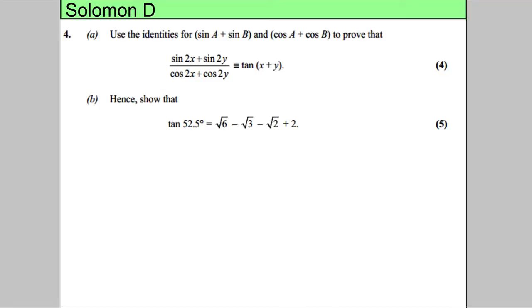In this question we're asked to use the identities for sine A plus sine B and cos A plus cos B to show that the following are true.